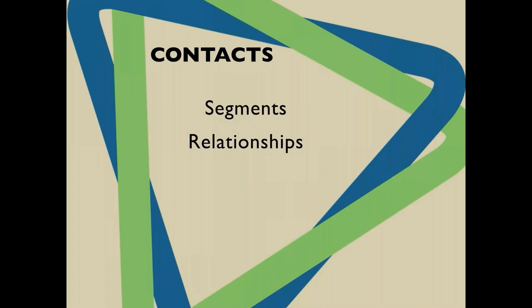CiviCRM also allows you to track relationships — for example, keeping track of employers and their relationship to employees, or who referred a client to you. Relationships can also be integrated with memberships. Sometimes an organization signs up for a membership and wants individuals within that organization to take advantage of it. With relationships, individuals can log in and inherit that membership, maintained at an organizational level. Once the organization's membership expires, all those individuals lose access to the membership portion of the website.